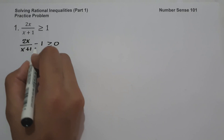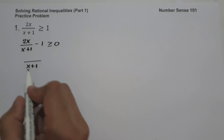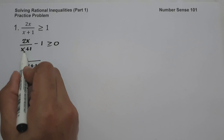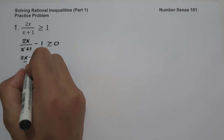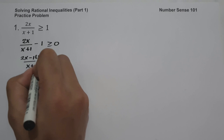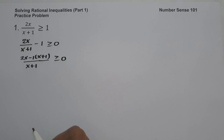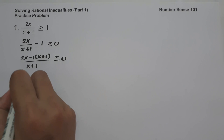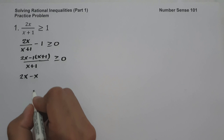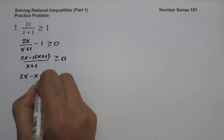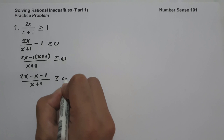Let us simplify this. We put x plus 1 on the denominator. x plus 1 divided by itself is 1, multiplied by 2x is 2x. Then multiply negative 1 by x plus 1: negative 1 times x is negative x, negative 1 times 1 is negative 1. So we have 2x minus x minus 1, all over x plus 1, greater than or equal to 0.